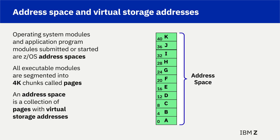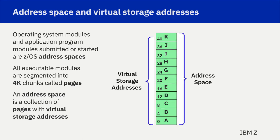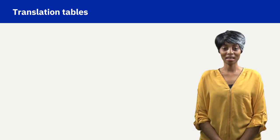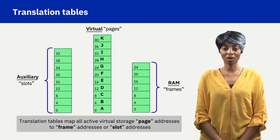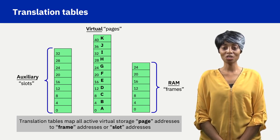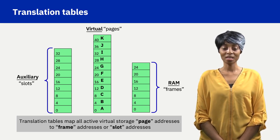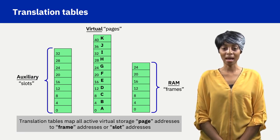Each address space is segmented into 4K chunks called pages. Each page is assigned a contiguous range of virtual storage addresses starting with address 0. The virtual page addresses need a physical location. The physical locations are RAM and auxiliary storage. Both RAM and auxiliary storage areas are segmented in 4K chunks to hold a virtual page.